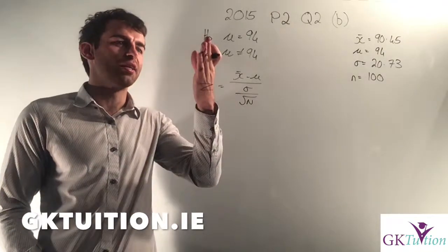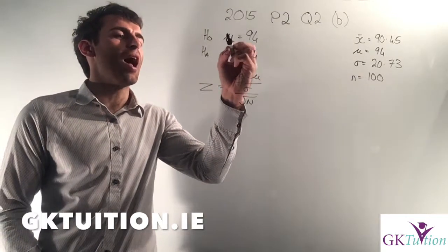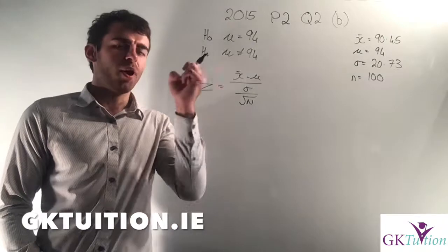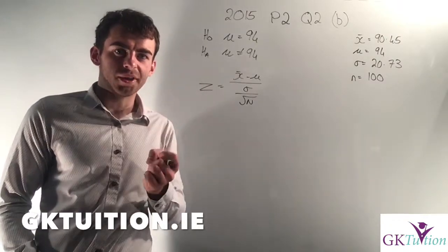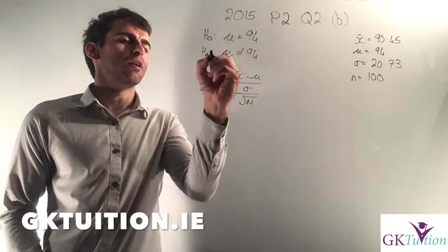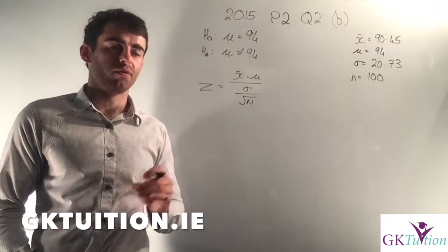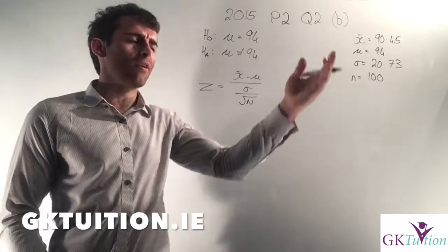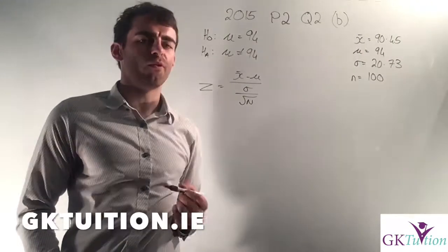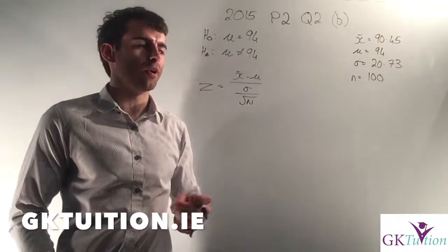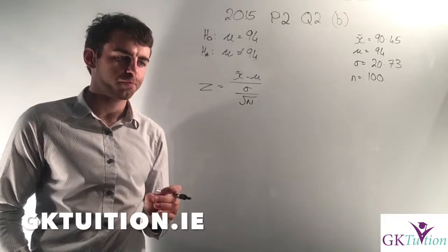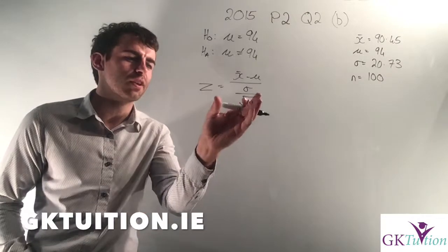My null hypothesis is what's claimed by the company: the average of the population was €94. Notice that this is a mu — mu is the population mean — and the population here is every single person shopping in the supermarket that Saturday. So they're claiming the average of all shoppers was €94. That's my null hypothesis H₀: μ = €94. My alternative hypothesis Hₐ is that the average is not €94, or in other words, that it's different from €94. Filling in my values: N is 100, standard deviation is 20.73, my sample result was €90.45, and I'm assuming the population mean is €94. I'm going to compare the result of my sample to the claim of the company to investigate if it's true.